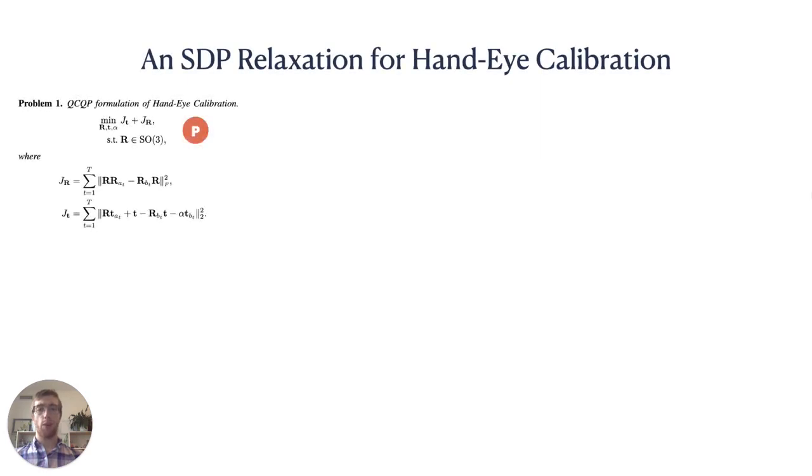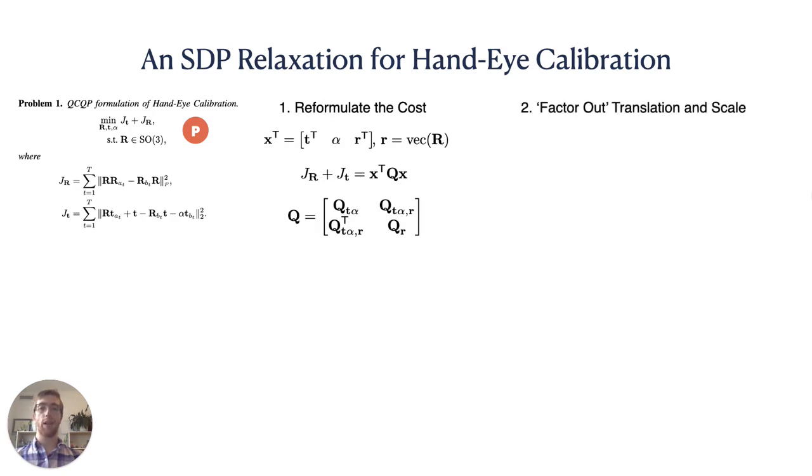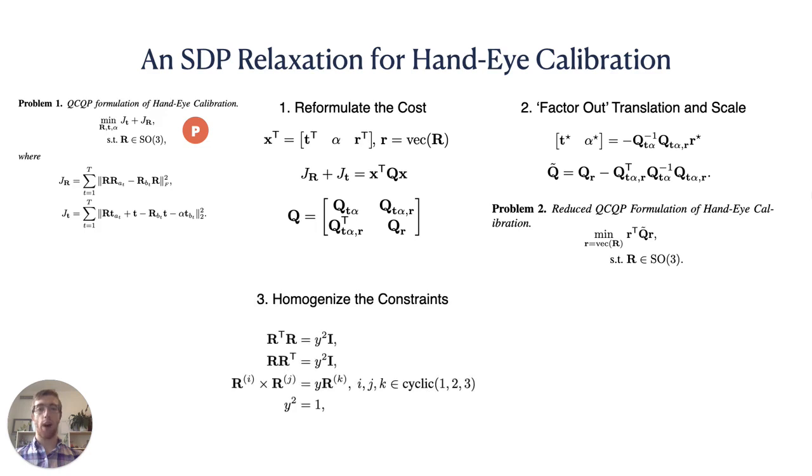With the machinery of SDP relaxations in hand, let's see how it can apply to our QCQP formulation of hand-eye calibration. We begin by reformulating the cost to fit the homogeneous standard QCQP form we've been working with. Next, we recognize that the translation scale are unconstrained and therefore their optimal values can be written as a function of the optimal rotation. This means that the QCQP can be reduced to a form that only involves the unknown rotation variable. In order to simplify the derivation of the dual, a homogenizing variable Y is introduced to remove the linear and constant terms in the quadratic SO3 constraints. This leaves us with a standard dual SDP which is subject to a great deal of theoretical machinery and can be solved by a variety of freely available optimizers.